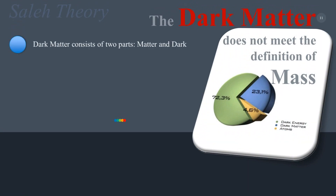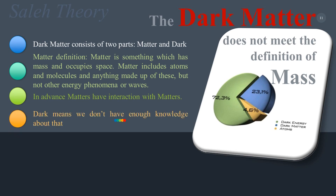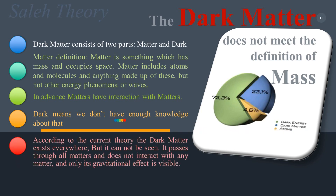Dark matter consists of two parts. Matter, by definition, is something which has mass and occupies space — it includes atoms, molecules, and anything made up of these, but not energy phenomena or waves. In advanced physics, matter interacts with matter, and 'dark' means we don't have enough knowledge about it. According to current theory, dark matter exists everywhere but cannot be seen; it passes through all matter.